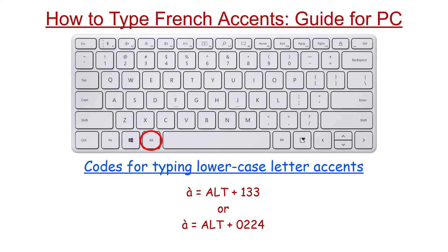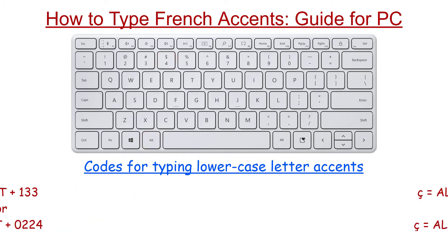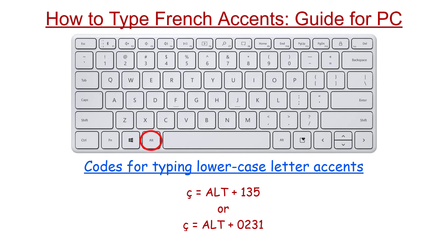Hold down ALT key and press 1, 3, 3 — or else hold down ALT key and press 0, 2, 2, 4. Then release ALT key for the letter to appear. Hold down ALT key and press 1, 3, 5 — or else hold down ALT key and press 0, 2, 3, 1. Then release ALT key for the letter to appear.